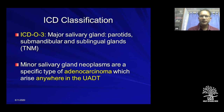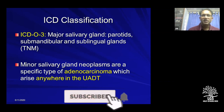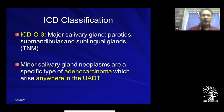Per the ICD classification, the major salivary glands — parotid, submandibular, and sublingual — are staged by TNM staging. The minor salivary glands, however, are staged as adenocarcinomas based on the subsite in which they arise. There are about 700 to 800 minor salivary glands, and they can arise anywhere in the aerodigestive tract.